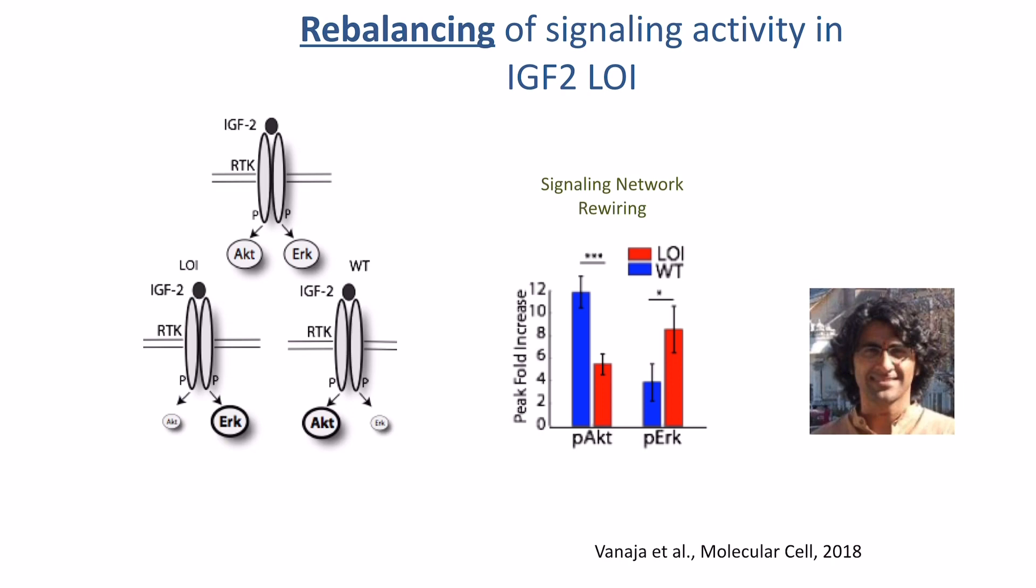One interesting result here is that if you start analyzing the cells, what you see is that this receptor I mentioned before can trigger two canonical signaling pathways. But what happens is as the cells acquire this loss of imprinting, the relative balance of the signaling pathways changes. What you see is that in LOI cells, the activity of AKT pathway goes down, the activity of the ERK pathway goes up.